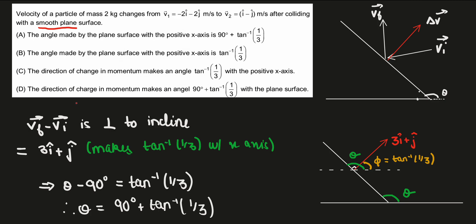This vector makes an angle phi equal to tan inverse of 1 by 3 with the positive x-axis, so option C comes out to be correct.